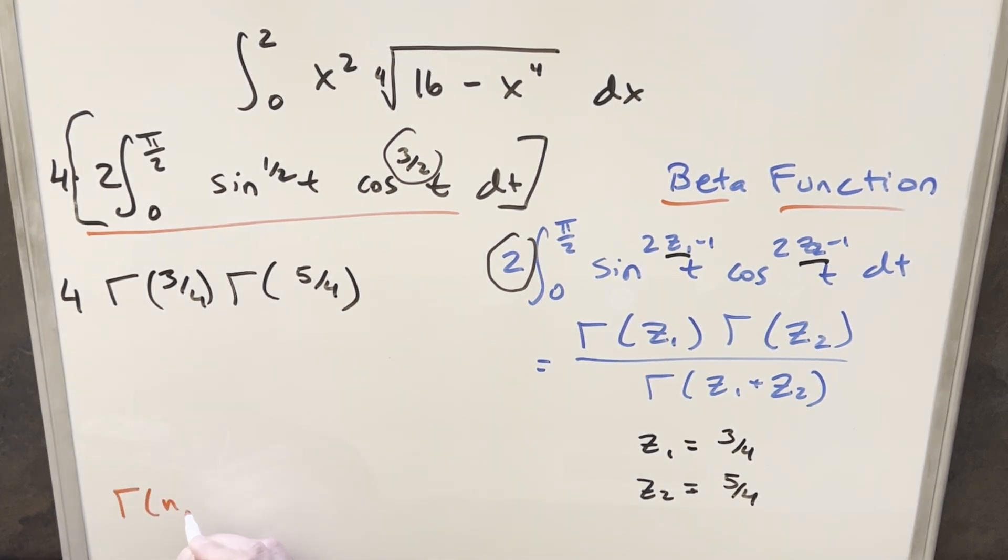So what I can do for this is use another formula, really similar to what we just did actually. For gamma of n plus 1, we can use the formula that this is the same thing as n times the gamma of n. So using it here on this value, gamma of 5 fourths, subtracting 1 from 5 fourths gives me 1 fourth. So for that value, I can write this as 1 fourth times gamma of 1 over 4.